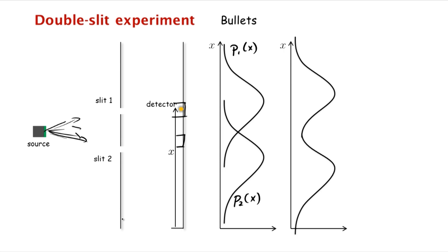Let's think of this as an armor plate with two holes and then a backstop, some sort of armor plate where the bullet comes to a rest. And now, when both slits are open, both holes are open, the probability of arrival of the bullet at this detector at x is actually the sum of these two curves, p1 of x and p2 of x, just as we'd expect with bullets.